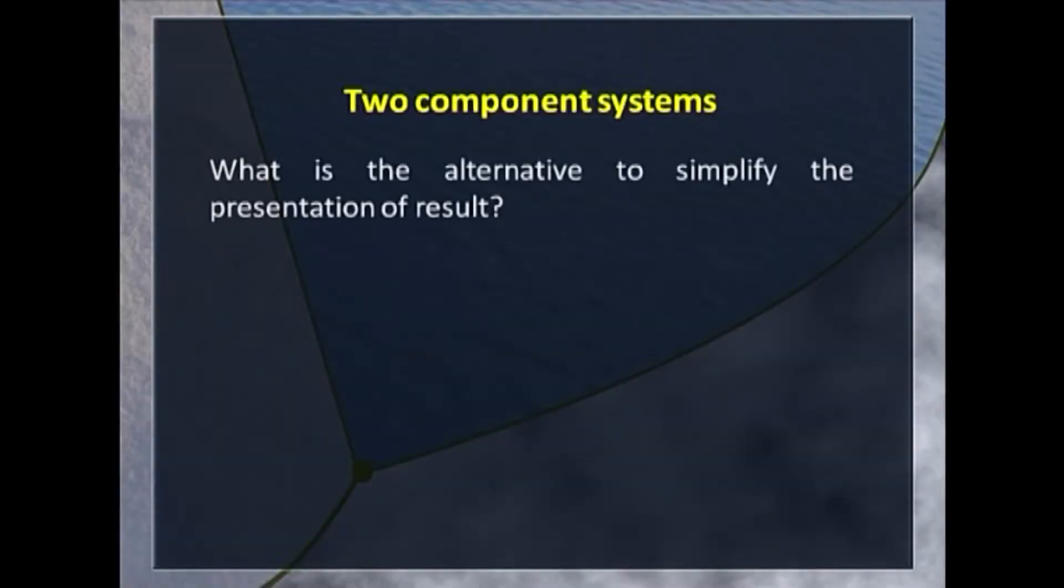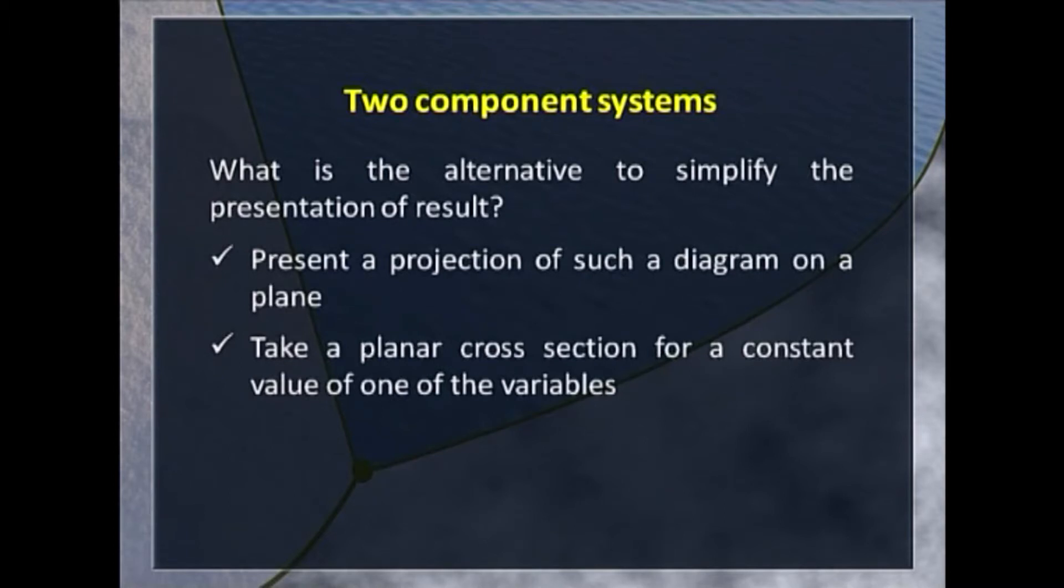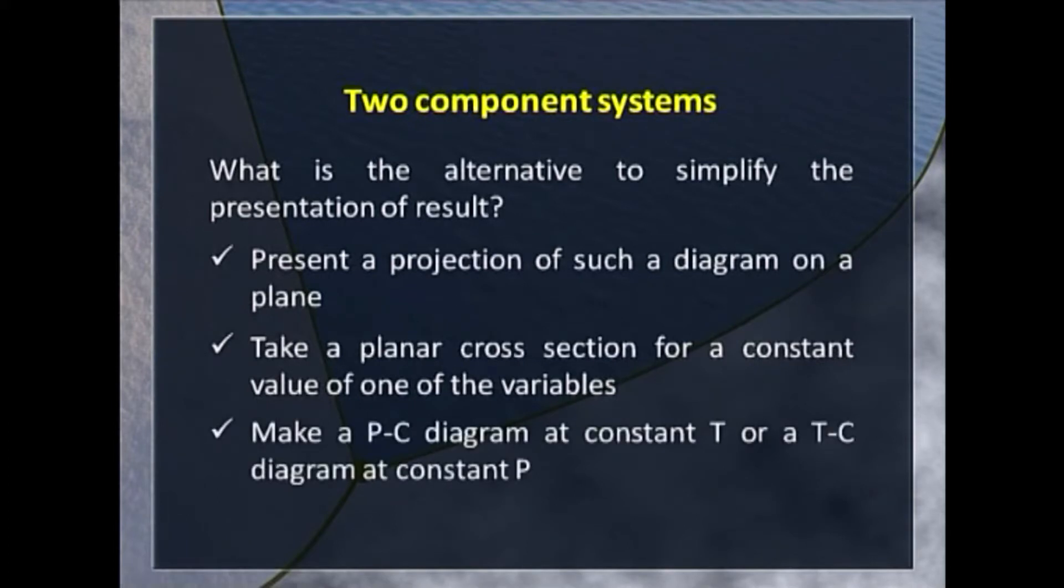What is the alternative? We can do a projection of such a diagram on a plane or take a planar cross-section for a constant value of one of the variables. We do that so we can construct a P-C diagram at constant temperature or a T-C diagram at constant pressure. Is it possible to simplify the study further? We can make an attempt.